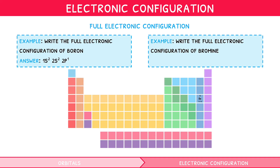For bromine, again starting from hydrogen, we count through: 1s², 2s², 2p⁶, 3s², 3p⁶, 4s², 3d¹⁰, and 4p⁵. So the full electronic configuration of bromine would be 1s², 2s², 2p⁶, 3s², 3p⁶, 4s², 3d¹⁰, 4p⁵.